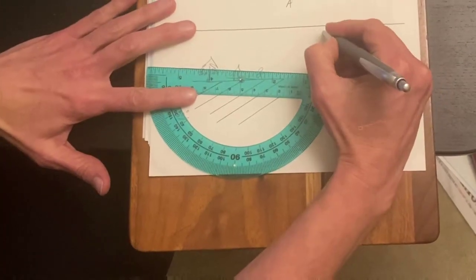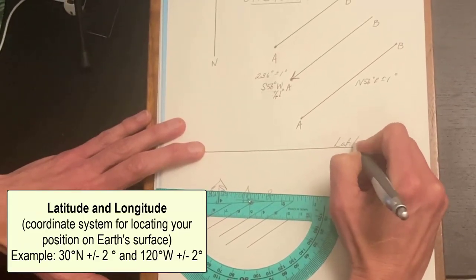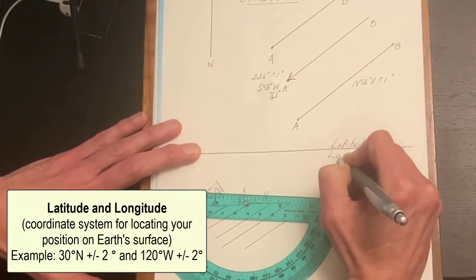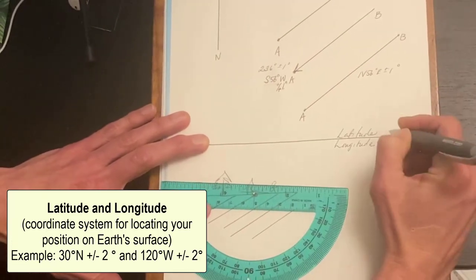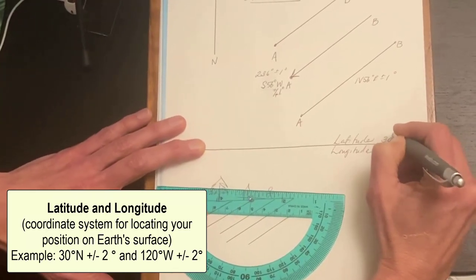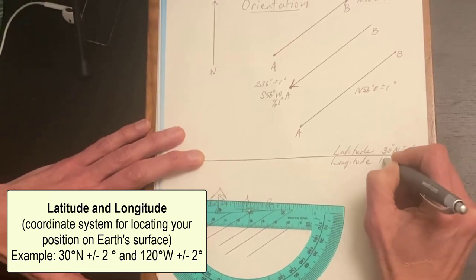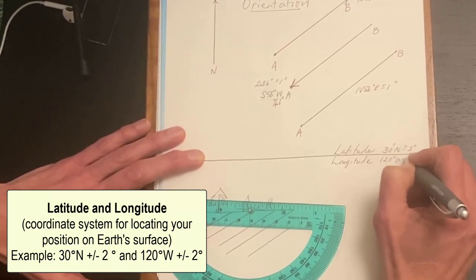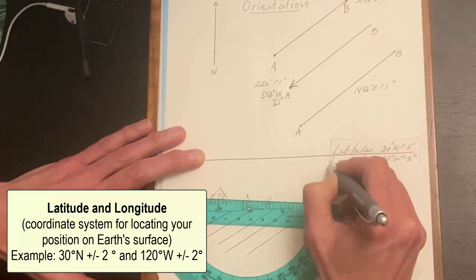Latitude and longitude again is a coordinate system. So just a reminder that latitude and longitude are just a spot you are on the planet and they have a format like 30 degrees north plus or minus 2 degrees and 120 degrees west plus or minus 2 degrees. These are a coordinate system they're very different.